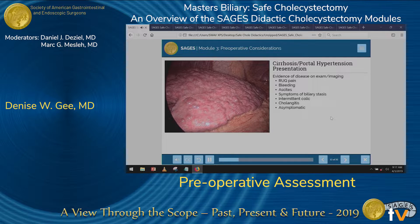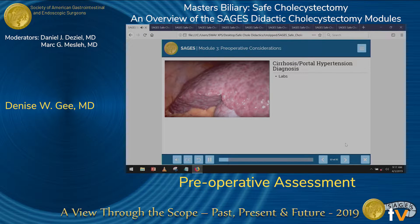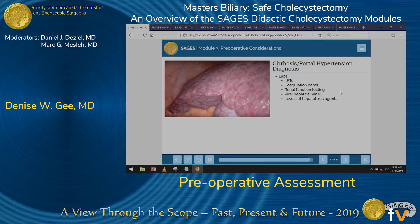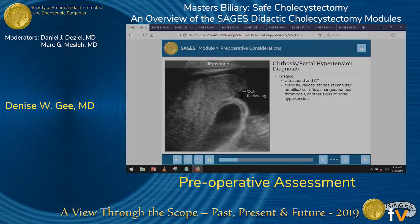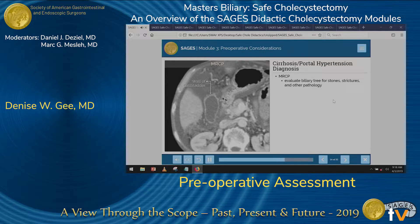In patients with cirrhosis or portal hypertension, there is often evidence of disease on exam or imaging, which can include right upper quadrant pain, bleeding, ascites, symptoms of biliary stasis, intermittent colic, cholangitis, or these patients can be completely asymptomatic. Labs should include liver function tests, a coag panel, renal function testing, a viral hepatitis panel, as well as levels of hepatotoxic agents such as acetaminophen if of concern. On imaging, ultrasound and CT scan are usually helpful demonstrating cirrhosis, varices, or ascites. MRCP is also important for evaluating the biliary tree for stones, strictures, and any other pathology.